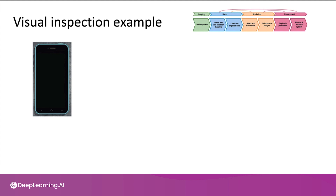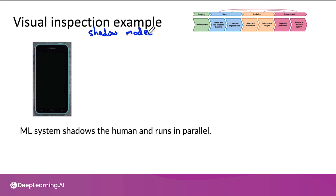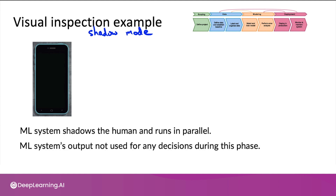Let's start with an example in visual inspection where you've had human inspectors inspect smartphones for defects and scratches, and you'd now like to automate some of this with a learning algorithm. When people are initially doing a task, a common deployment pattern is shadow mode deployment: you start by having the machine learning algorithm shadow the human inspector and run in parallel. During this initial phase, the learning algorithm's output is not used for any decision — whatever it says, we go with the human judgment.